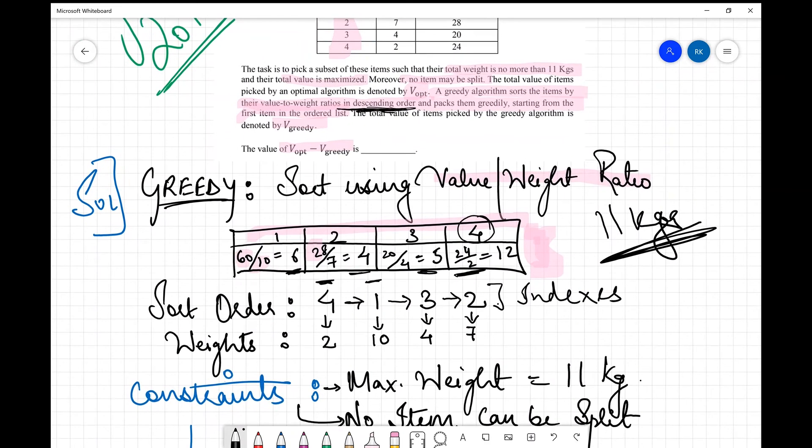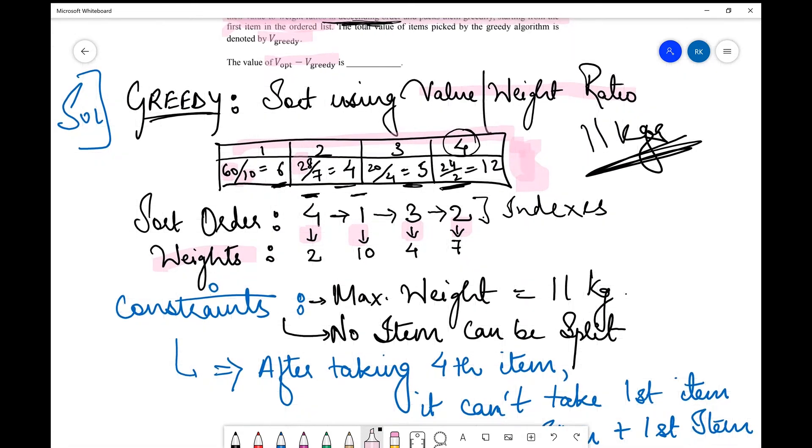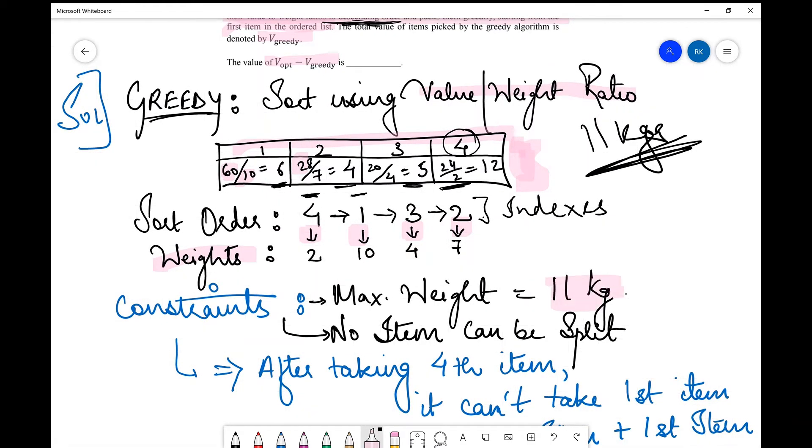The sum of the weights of the items that it can choose. So I have also listed the weights of each of these items which are being placed like these arrows. So these are the weights of these items corresponding to them I have placed that. So I've written that the constraints are that maximum weight is 11 kgs and no item can be split. That is another important constraint.